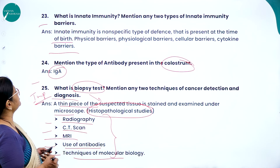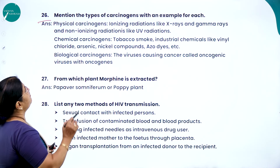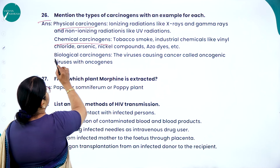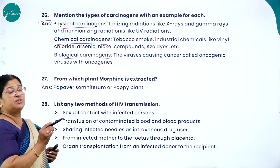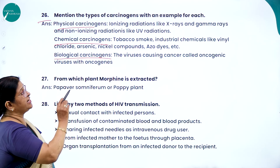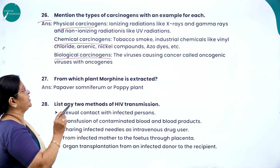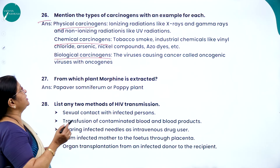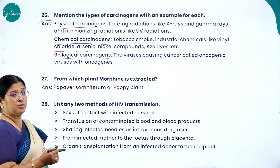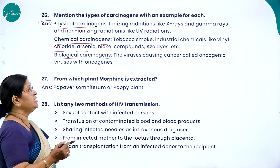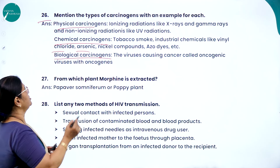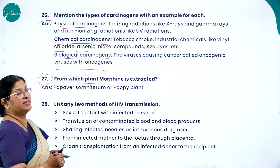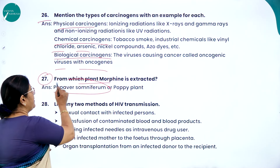Mention the types of carcinogens with an example for each. Physical carcinogens: ionizing radiations like X-rays and gamma rays, and non-ionizing radiations like UV rays. Chemical carcinogens: chemicals released through tobacco smoke, and industrial chemicals like vinyl chloride, arsenic, nickel compounds, and azotase. Biological carcinogens: oncogenic viruses — viruses that cause cancer and carry oncogenes.